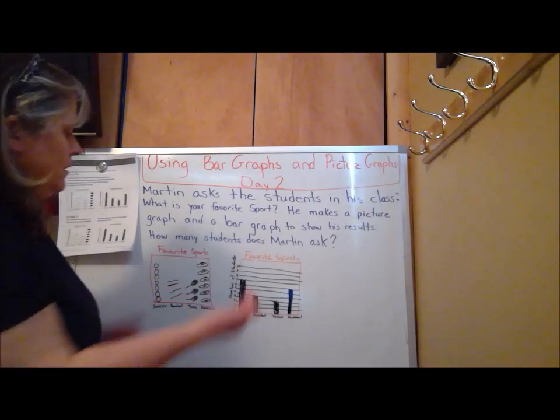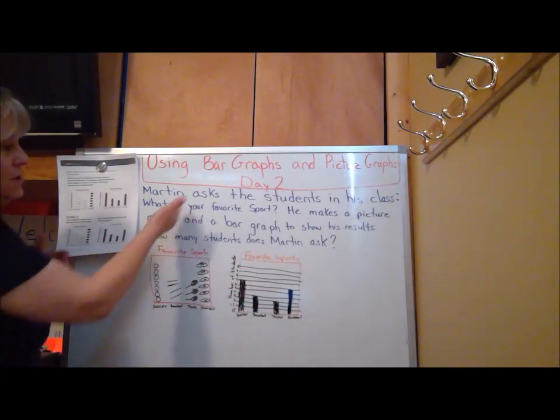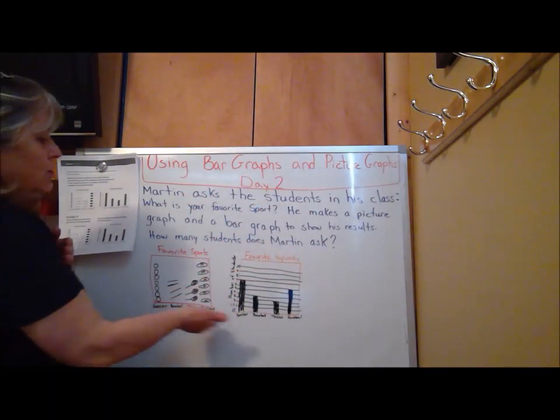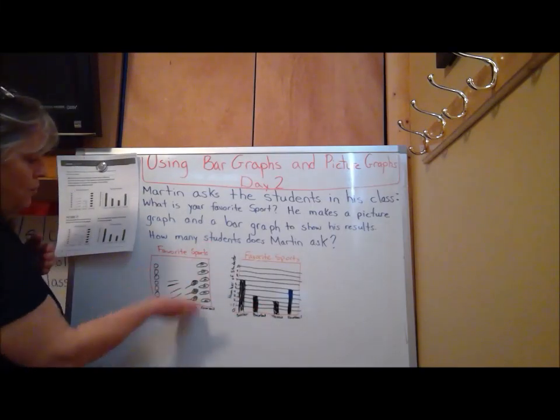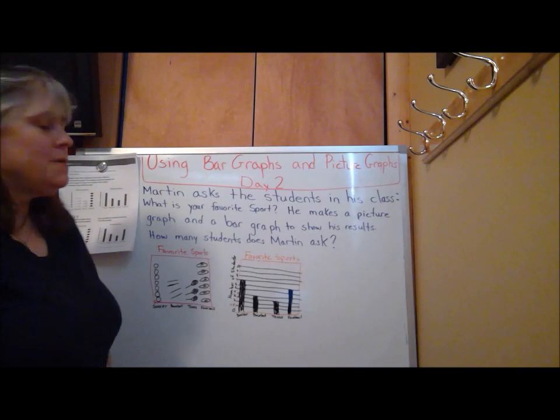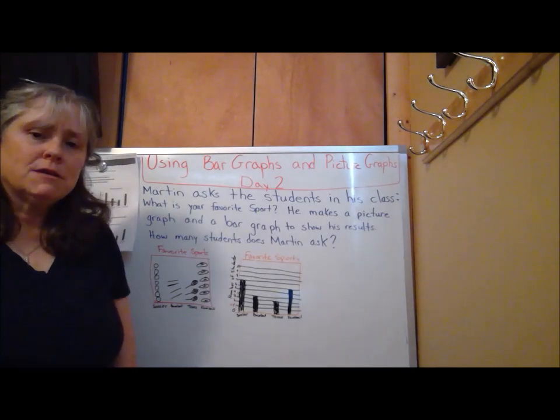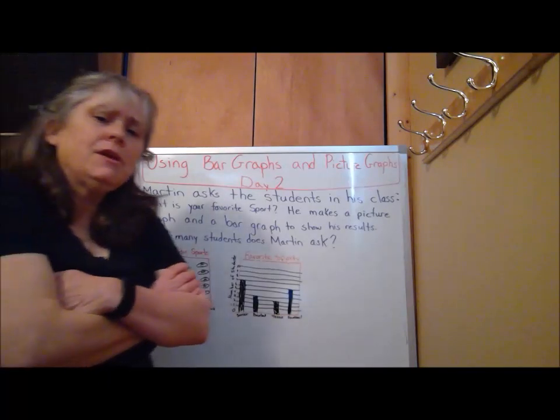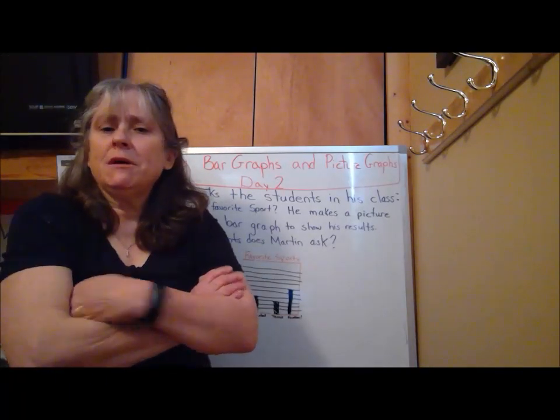What do we know? We know all of this. The story in here doesn't tell us much more. It just tells us that he made a picture graph and he made a bar graph. So we know this. And then the question is, how many students does Martin ask? So what are you going to do? How do you think you would solve this problem? Let's think about it for a minute.